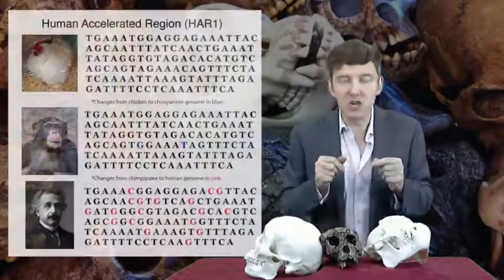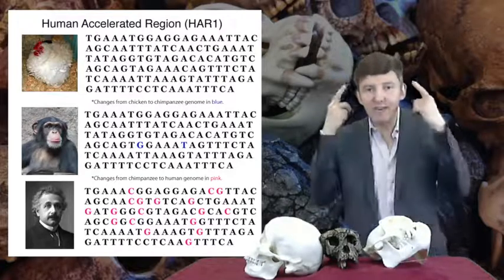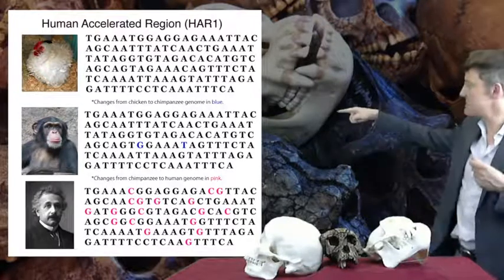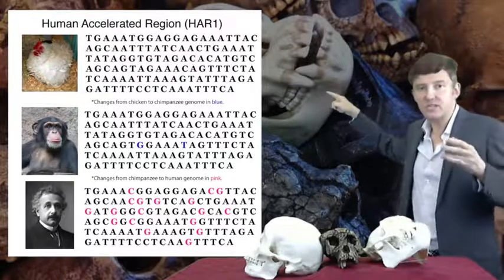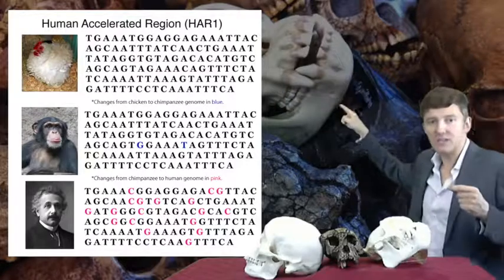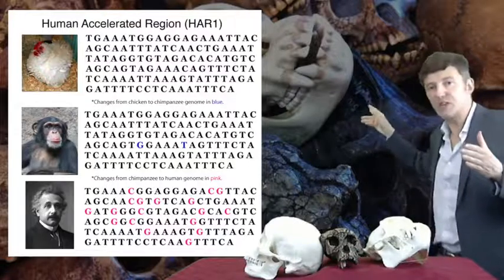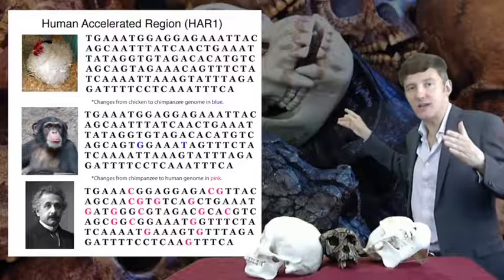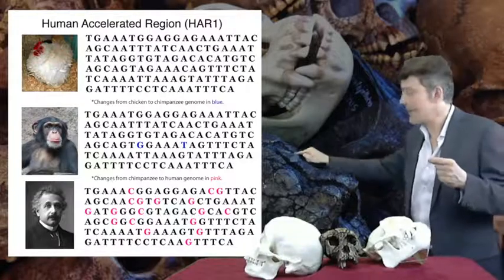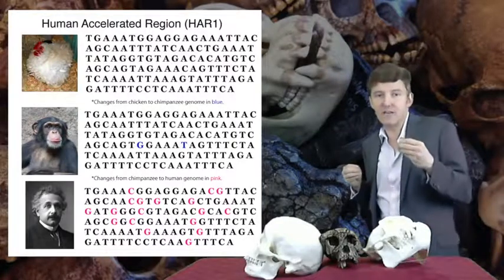HAR1 tops the list of the most divergent sequences between us and chimps, and it's an exciting finding because it seems directly linked with our braininess. Looking at the table showing the HAR1 sequence in humans, chimps, and chickens — this region has changed very little for most vertebrate evolution: the chimp and chicken sequences differ by just two letters. The fact that HAR1 was essentially frozen in time for 300 million years indicates it does something very important. However, the human HAR1 has undergone 18 substitutions, suggesting its function was significantly modified in our lineage.